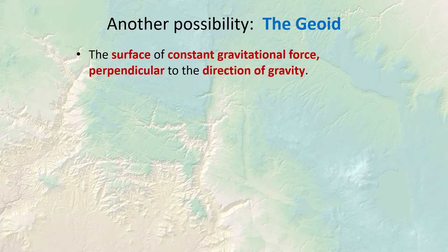There is a possibility called the geoid, which is the surface of constant gravitational force perpendicular to the direction of gravity. You know how gravity gets less the farther away you get from the planet. This range of gravitational values implies an infinite number of surfaces representing constant gravitational force, each nested inside the other extending from space to the earth.